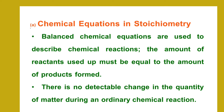Chemical Equations in Stoichiometry. Balanced chemical equations are used to describe chemical reactions. The amount of reagents used must be equal to the amount of products formed. There is no detectable change in the quantity of matter during an ordinary chemical reaction.